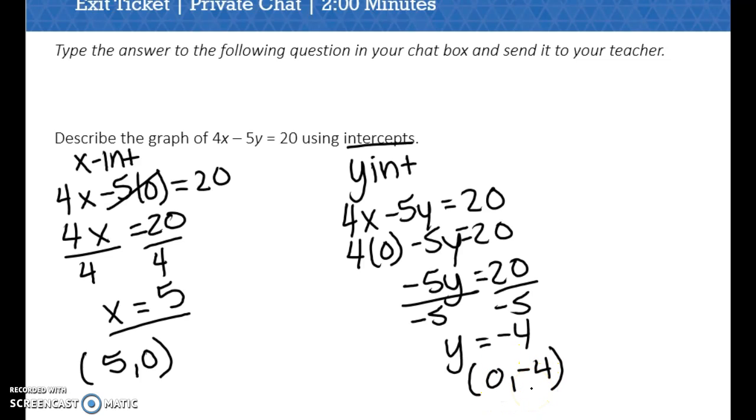So those are just some quick additional examples for 3.03 lines and intercepts. I hope that helps. Goodbye!